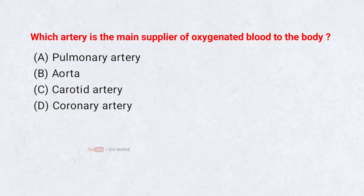Which artery is the main supplier of oxygenated blood to the body? Correct answer B: Aorta.